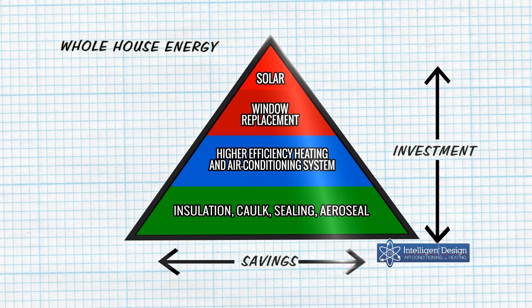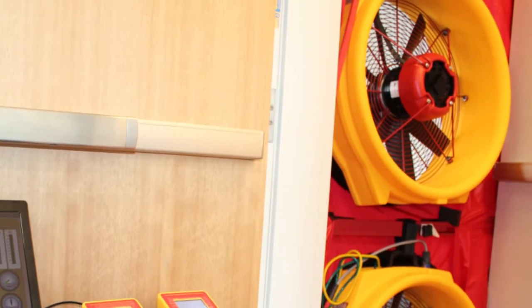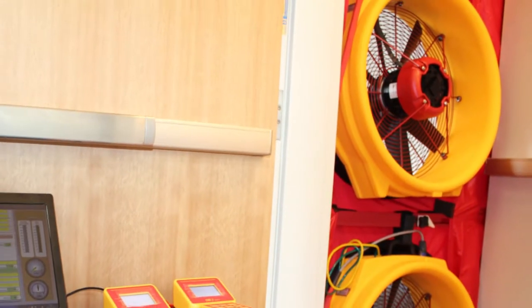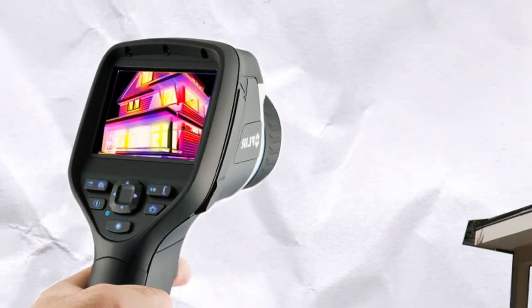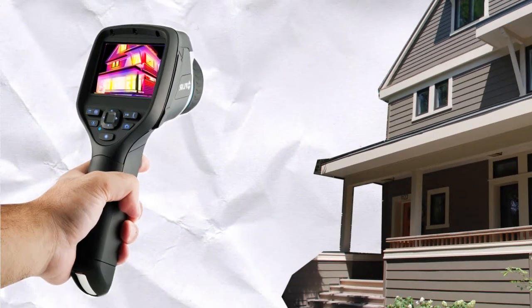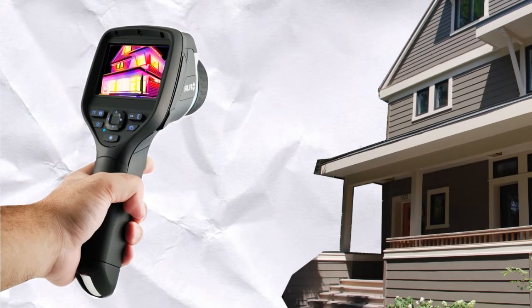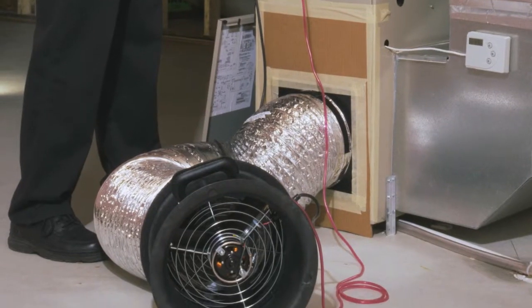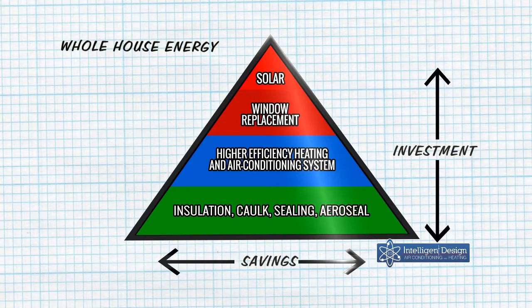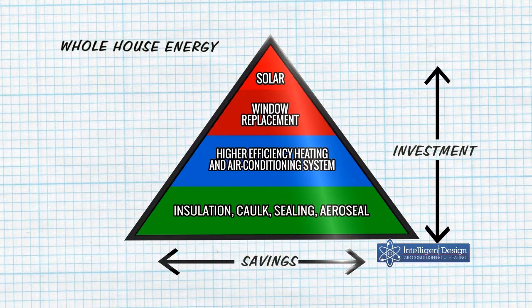What we do is come in and depressurize the house and test it for leaks. We look at the home with a thermal imaging camera to find missing insulation pockets, and we test the ductwork to see if it leaks. There's no sense in getting a 25 SEER top-of-the-line air conditioning and heating system if it's all blowing out into the cavity and attic spaces. Once we do those tests — those items are at the bottom of the triangle — then we move up.